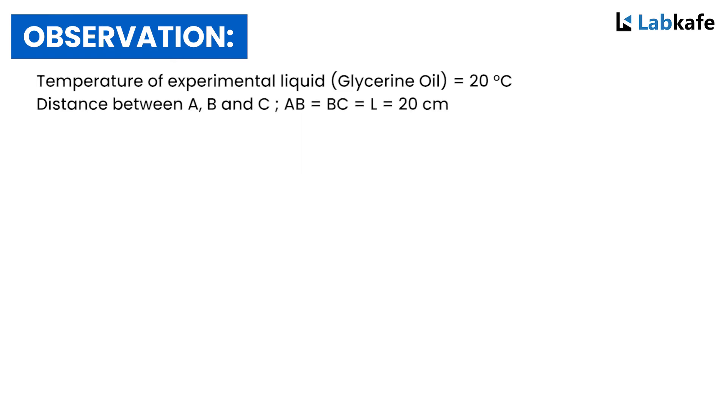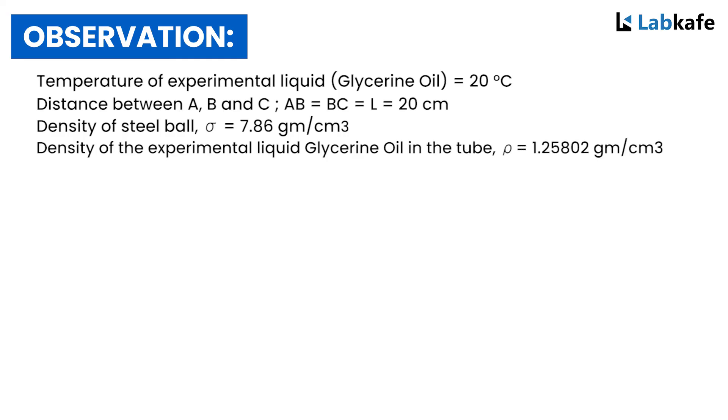Observation: The temperature of the experimental liquid, in our case glycerin, is 20 degrees centigrade. The distance between ABC where AB equals BC equals L equals 20 centimeters. The density of the steel ball sigma equals 7.86 grams per centimeter cube. The density of glycerin at 20 degrees centigrade rho equals 1.25802 grams per centimeter cube. The acceleration due to gravity g equals 980 centimeters per second square.